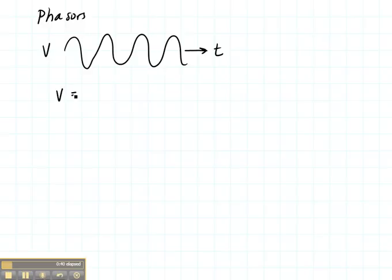We can write that voltage as an amplitude times the cosine of omega t minus beta z, if it's going in the z direction, plus phi.